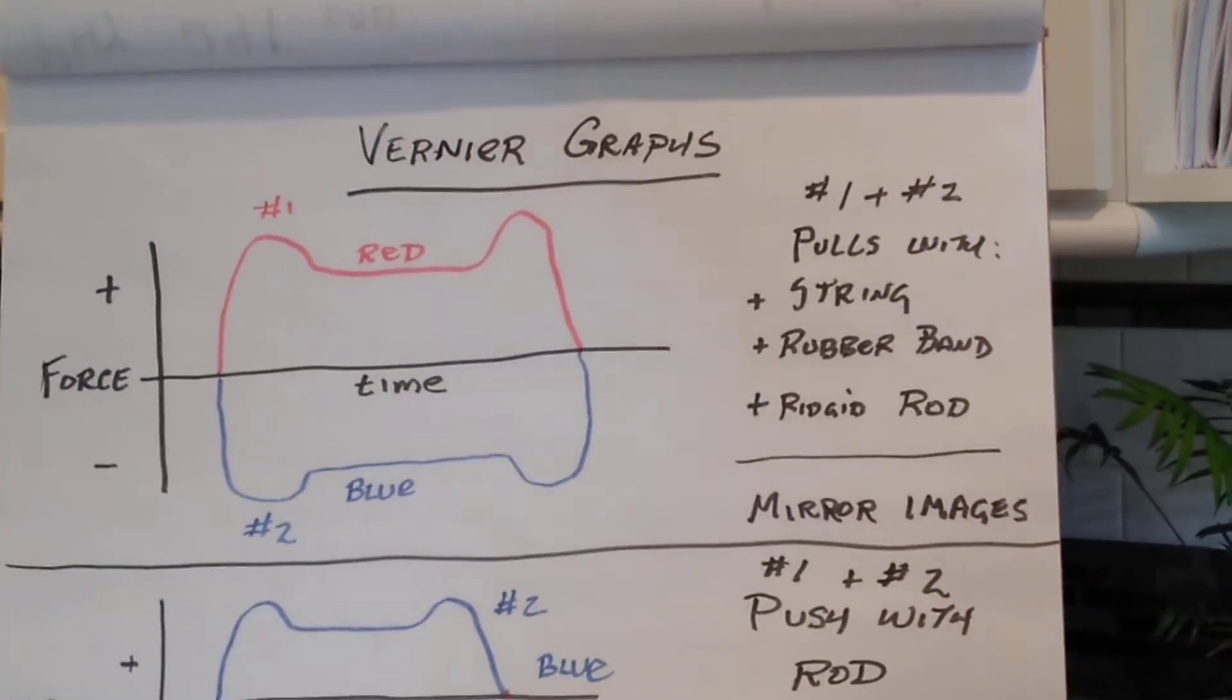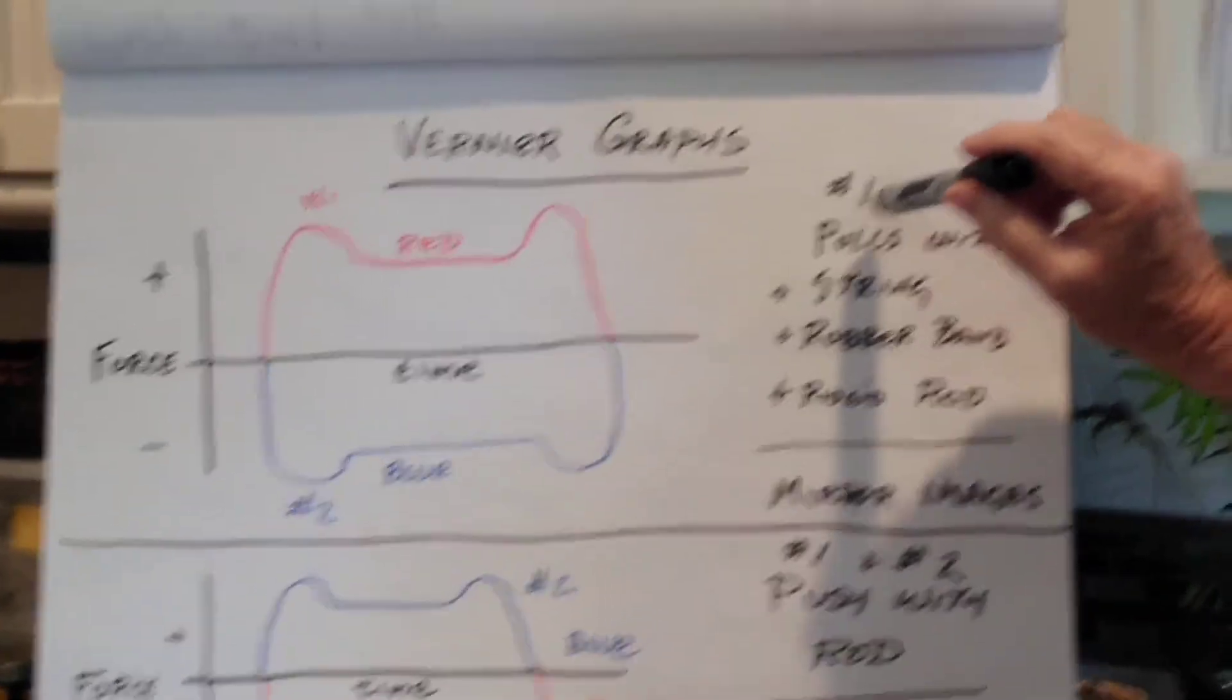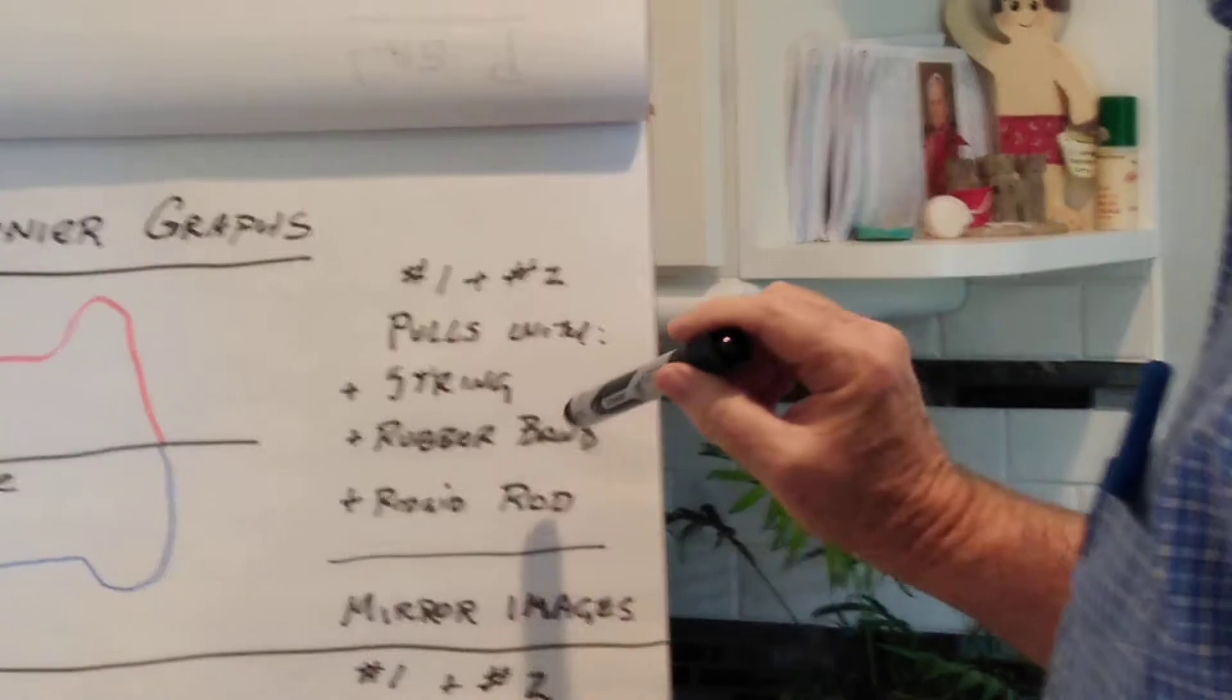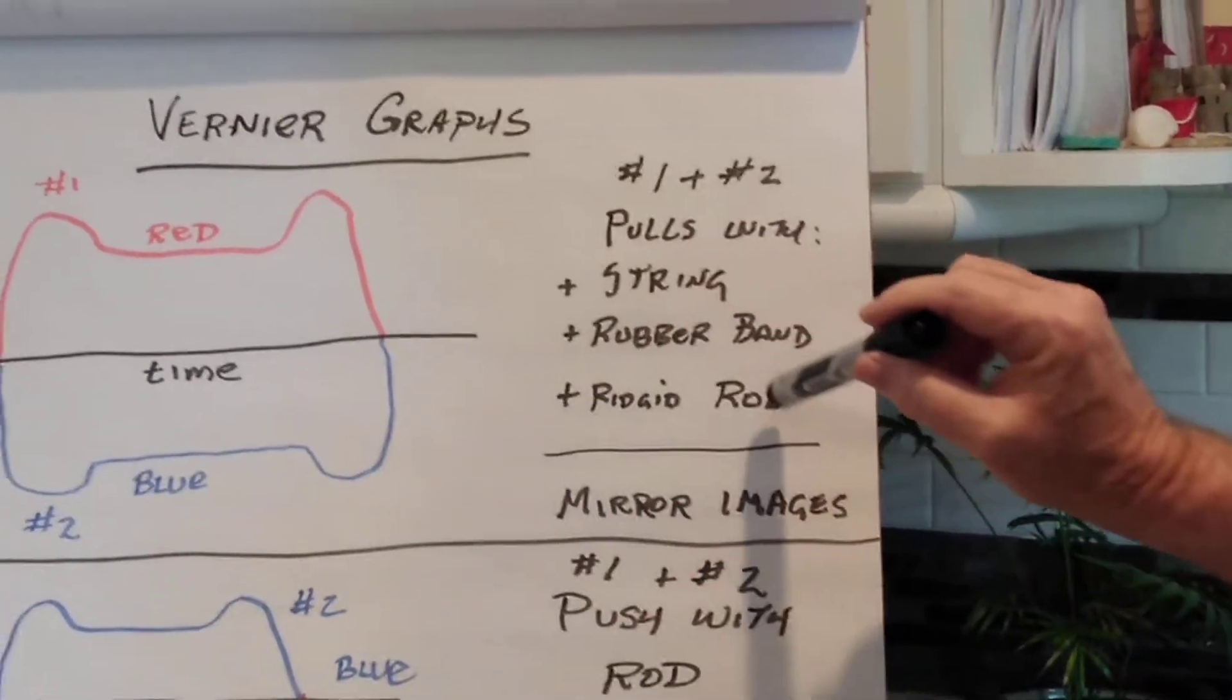As you can see, this first graph represents force sensors number one and number two when we pulled with the string, with the rubber band, or with the rigid rod. It did not matter.